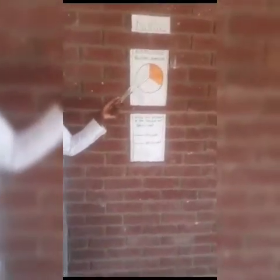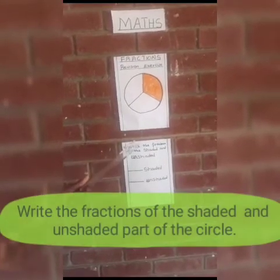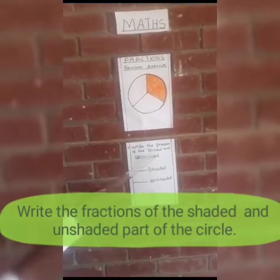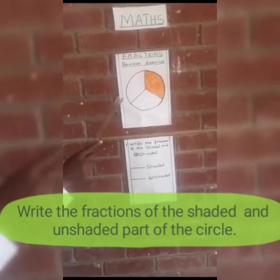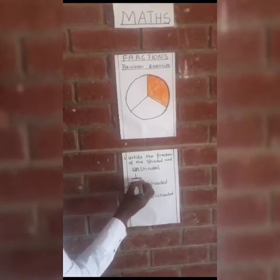For example, if you are given a circle like this, and from this circle there are three parts — one of the parts is shaded and two parts are not shaded — and then they ask you to write the fraction of the shaded and unshaded. If we go back to the circle, we are going to see that only one part is shaded.